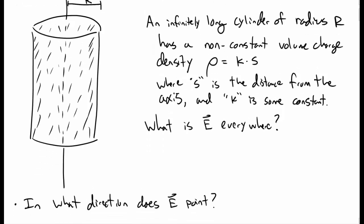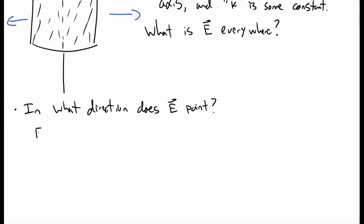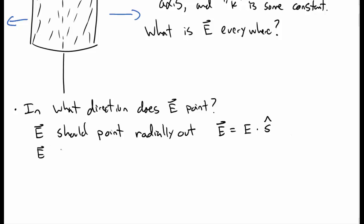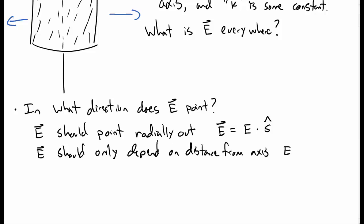The first thing we have to do with any Gauss's Law problem is figure out what direction the electric field points. By symmetry, the electric field should only point radially outward from the center of the cylinder. Since it only points radially outward, we should use cylindrical coordinates. So the electric field is E in the s-hat direction, and by similar reasoning, the magnitude should only depend on s — so E is just some function of s in the s-hat direction.